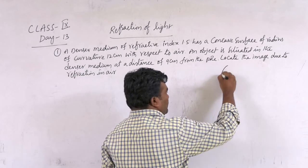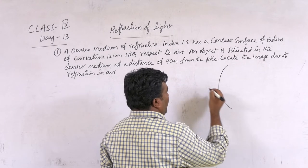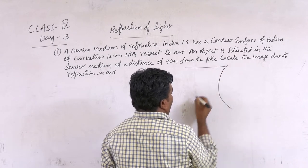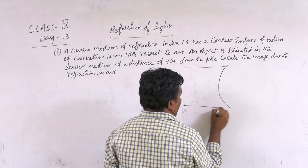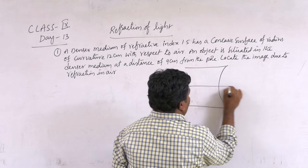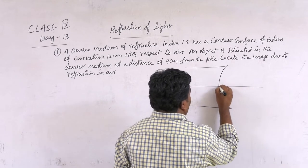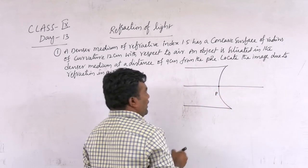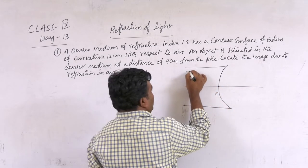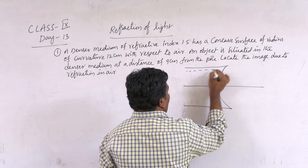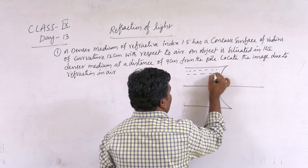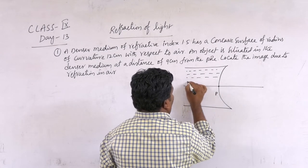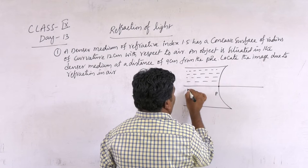I am taking this refraction base. This is the principal axis. This is the core. This is the denser medium. The light rays travel from denser medium to rarer medium.